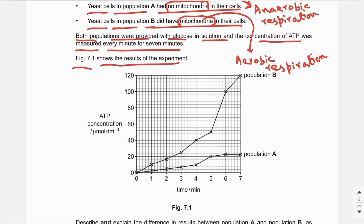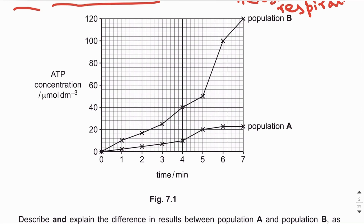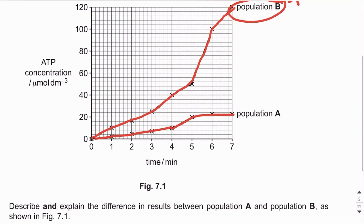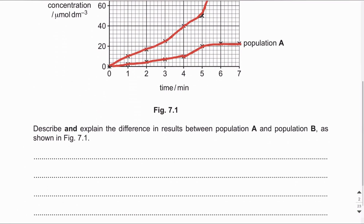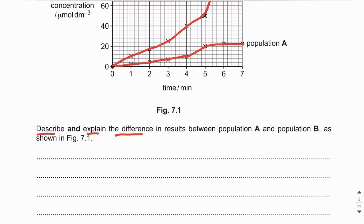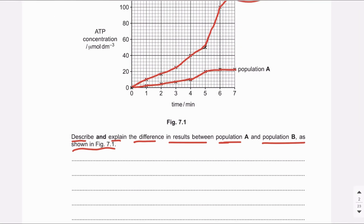Both populations were provided with glucose in solution and the concentration of ATP was measured every minute for seven minutes. On the graph, the x-axis shows time and the y-axis shows ATP concentration in millimoles per dm³. Population A shows a very small increase in ATP concentration that levels off, whereas population B shows a sharp increase, producing much more ATP than population A.